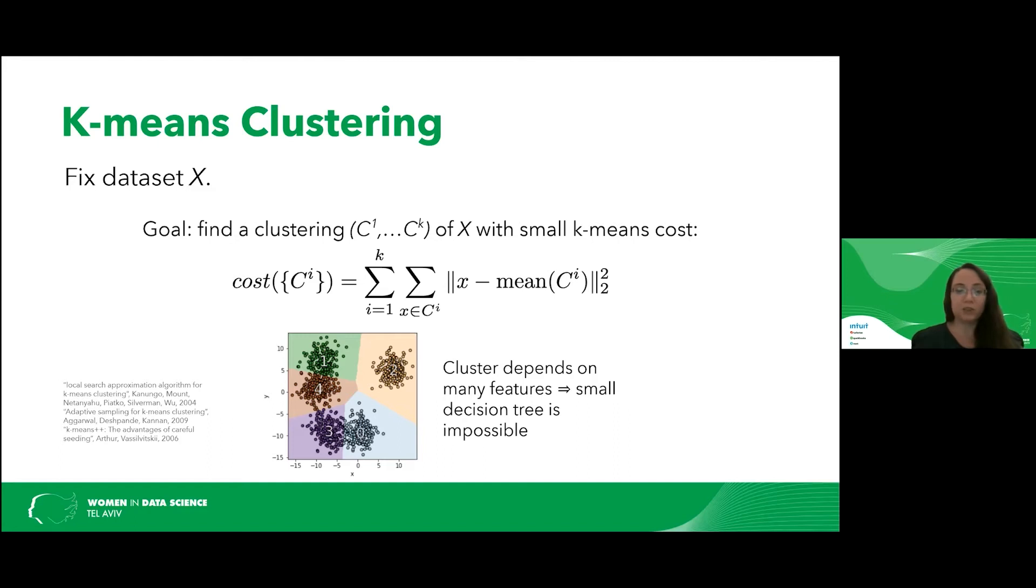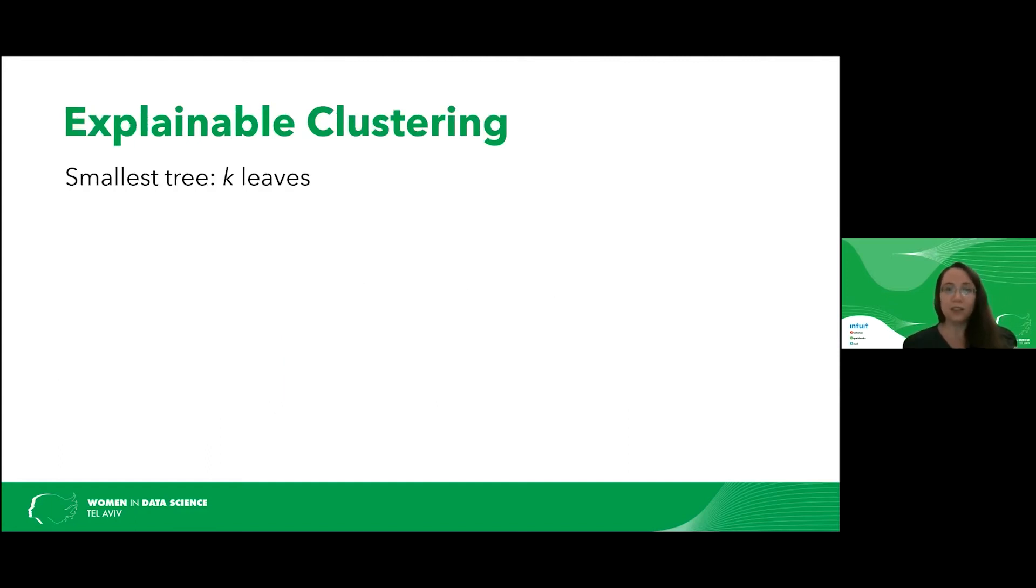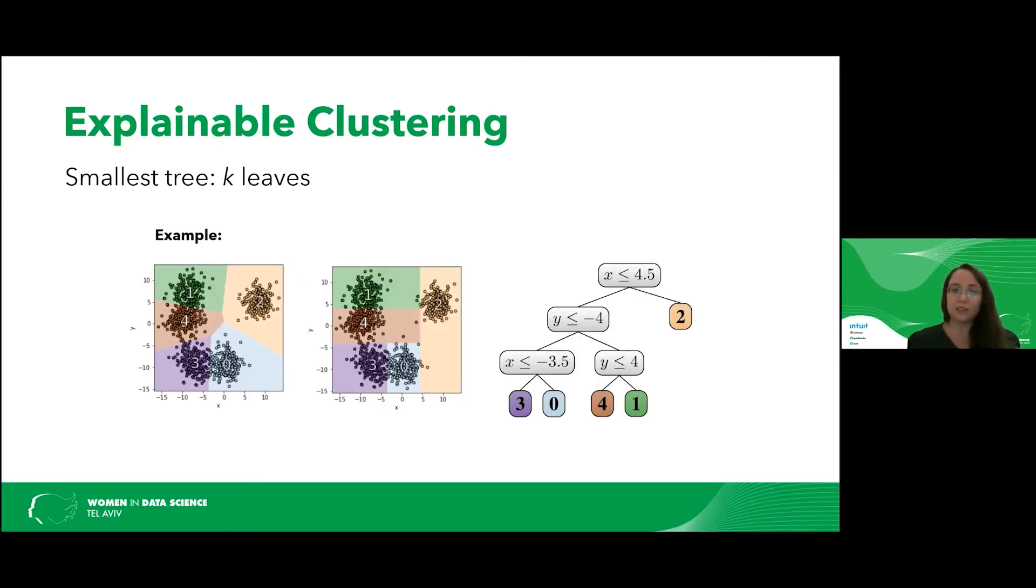So what we want is explainable clustering. And what do I mean by that? I want the clustering that is defined by a small decision tree. The smallest possible decision tree is a tree with k leaves. So here's an example of the data set that we had before. And now the same data set and a different clustering with a clustering defined by the decision tree on the right. So what we see in here is a decision tree with five leaves.